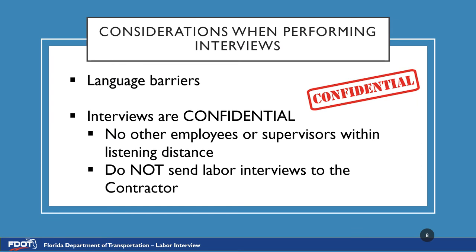Considerations when performing interviews: there may be situations in which an employee who was randomly selected for an interview cannot speak English. In these situations, you will need to find someone on site that can act as a translator. If you cannot locate anyone, please get the employee's name, number, and preferred language and give this information to the RCS. The RCS will then coordinate a meeting with the employee and a proper translator to conduct the interview. You will still fill out the observation sections H, I, and J to notate what they were doing on the day of the interview. This process is in place to ensure that employees are not being excluded from the labor interview pool simply because they cannot speak English, and it still meets the requirement of choosing employees at random.